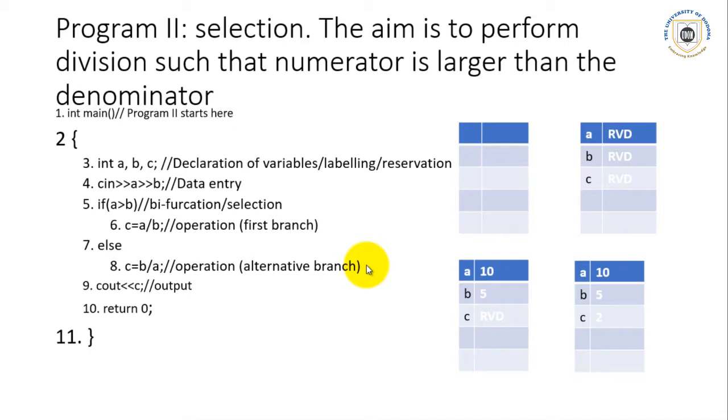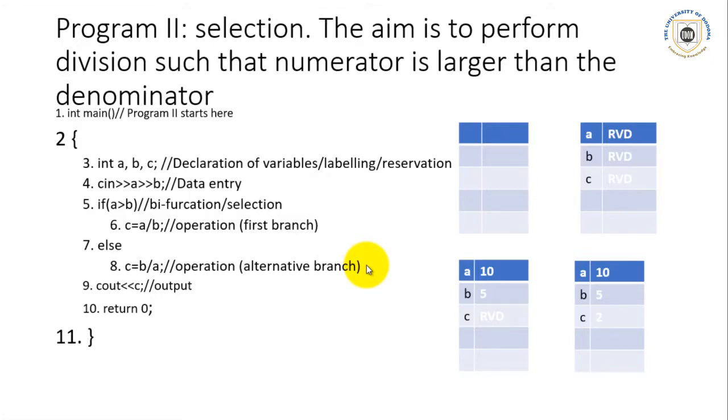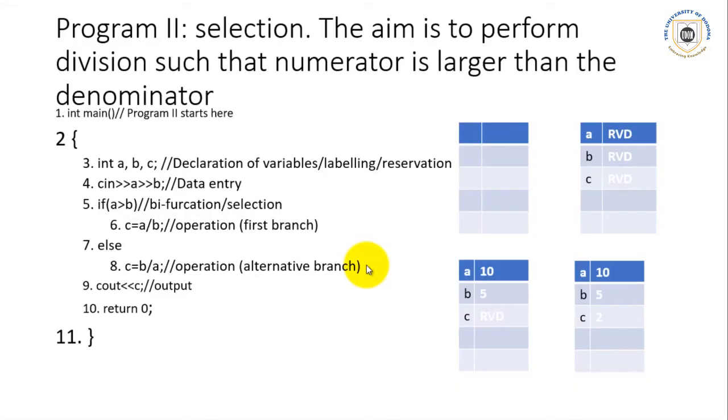Welcome back to our programming classes. Now we shall concern ourselves with selection. Selection in programming is the power of a computer to perform one instruction instead of another. It is normally called branching, or another name for this action is bifurcation. Selection concerns a scenario whereby, based on a certain condition, one instruction will be selected instead of another.